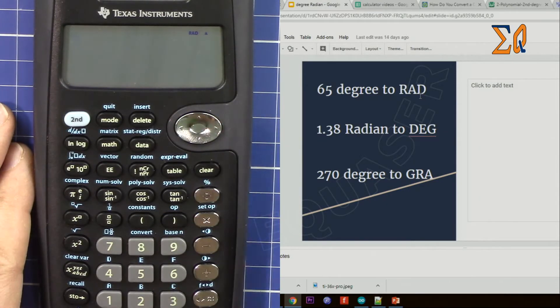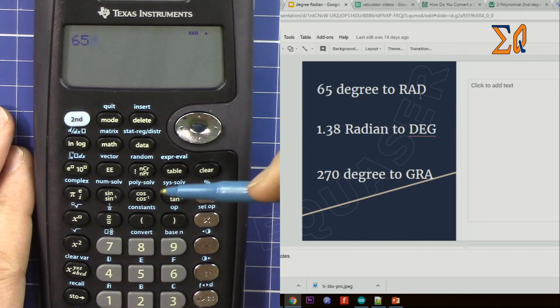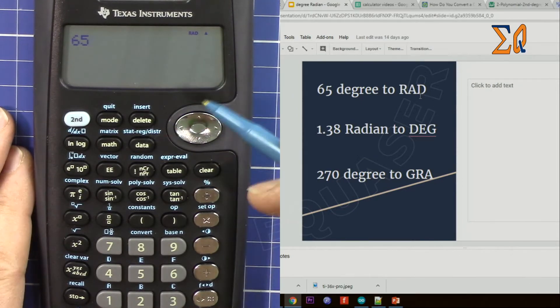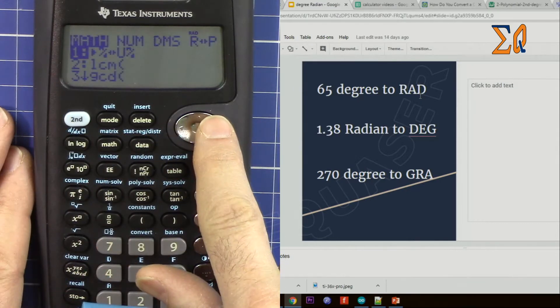We are in radian. Let's enter 65. Now we have to tell that this is a degree because we want it in radian, because it could be gradient or even radian. So press math, go to the right, go to the right, and then here one is degree. So now it's 65 degrees.